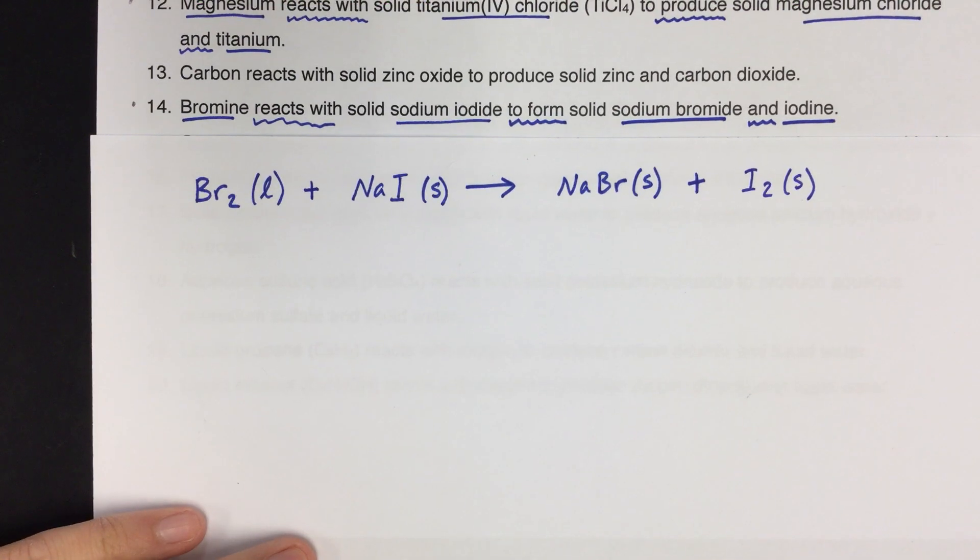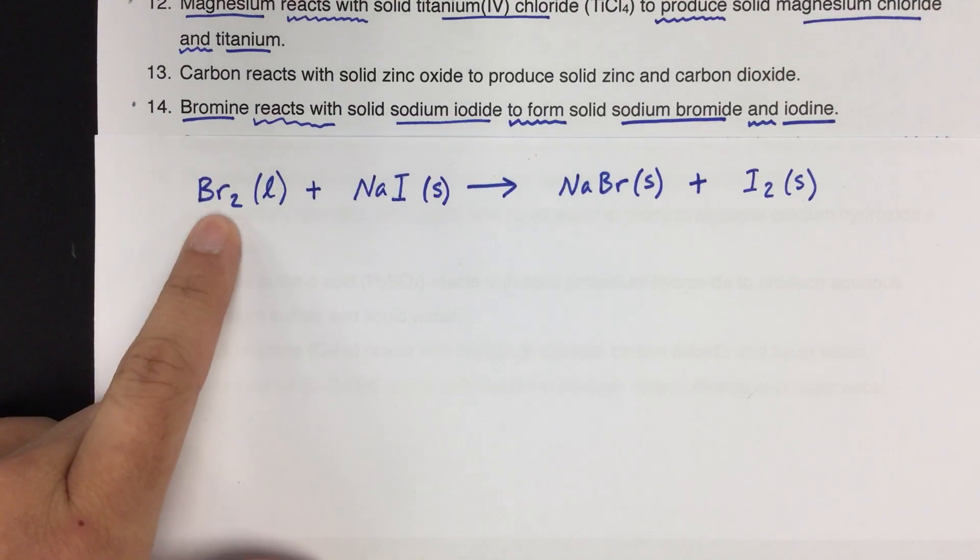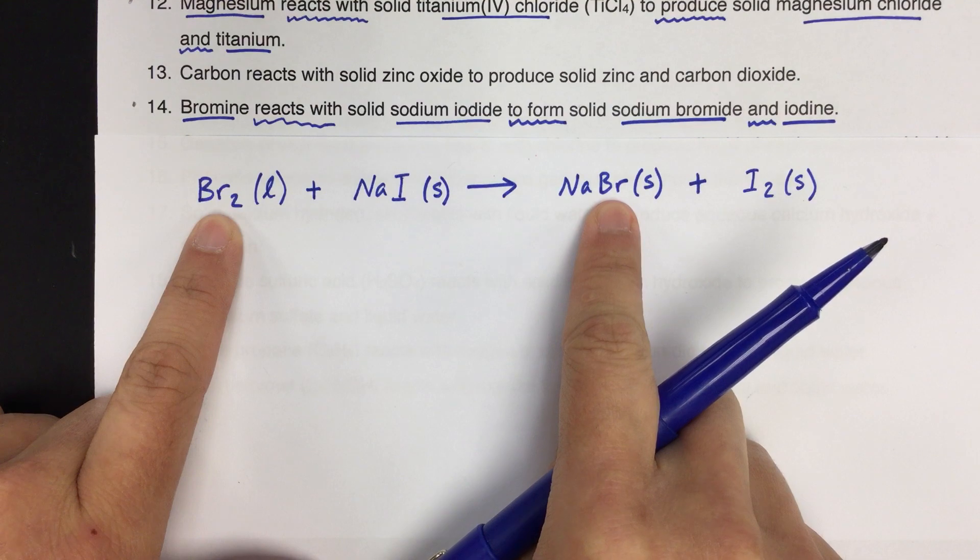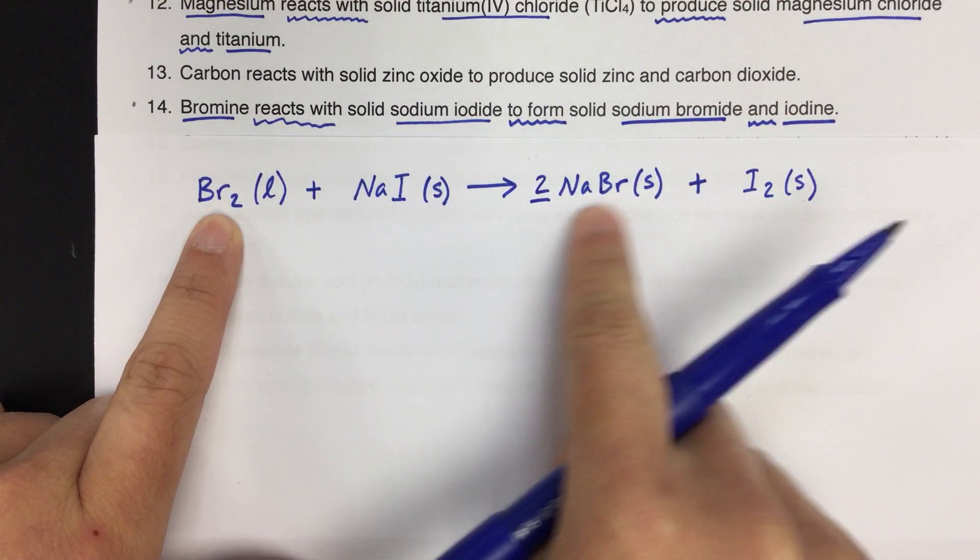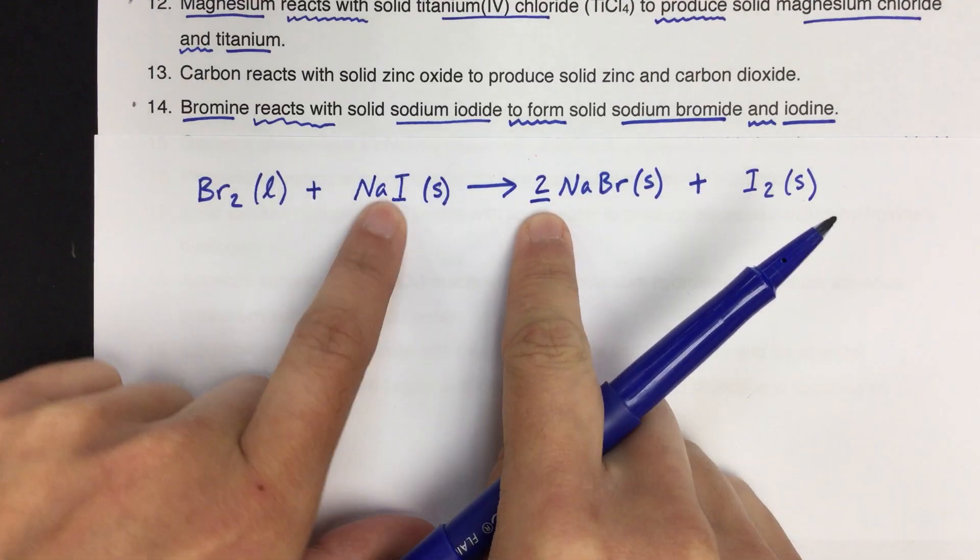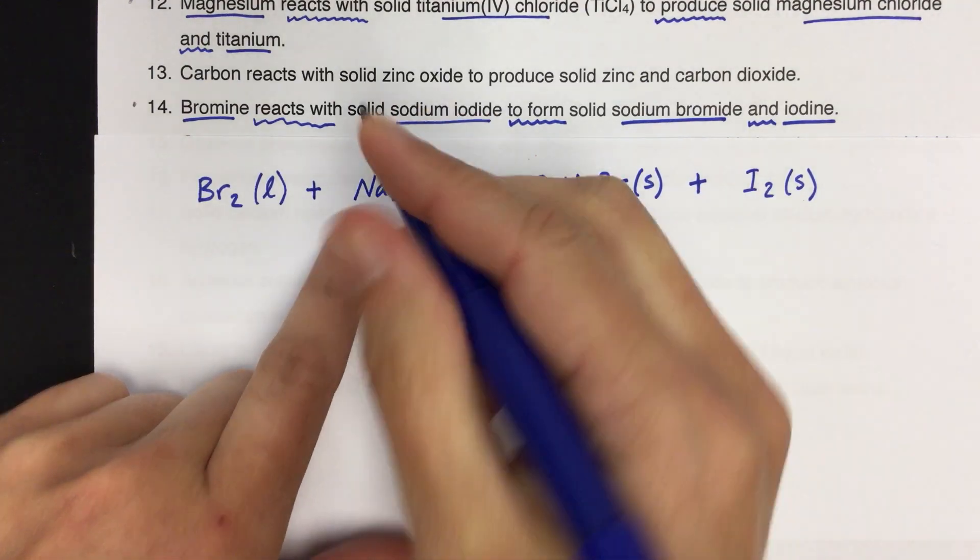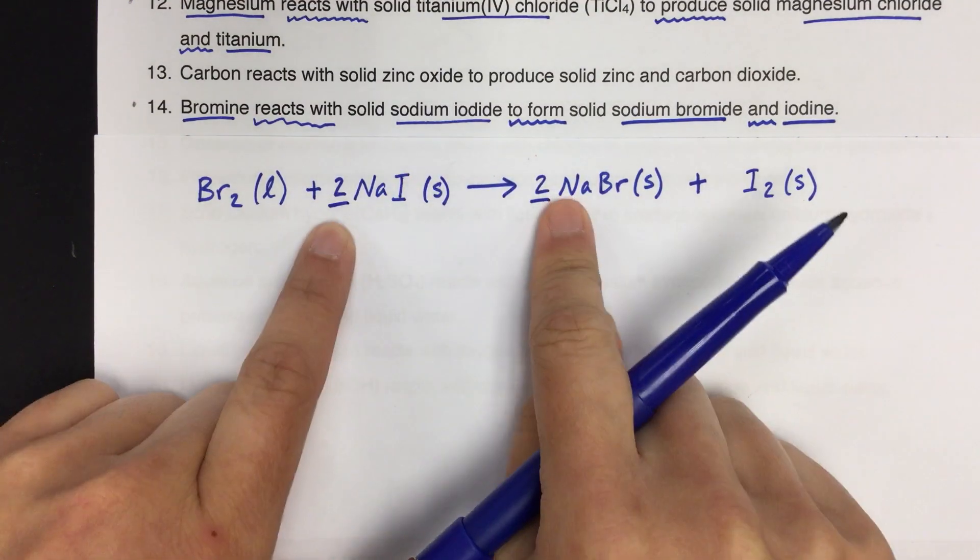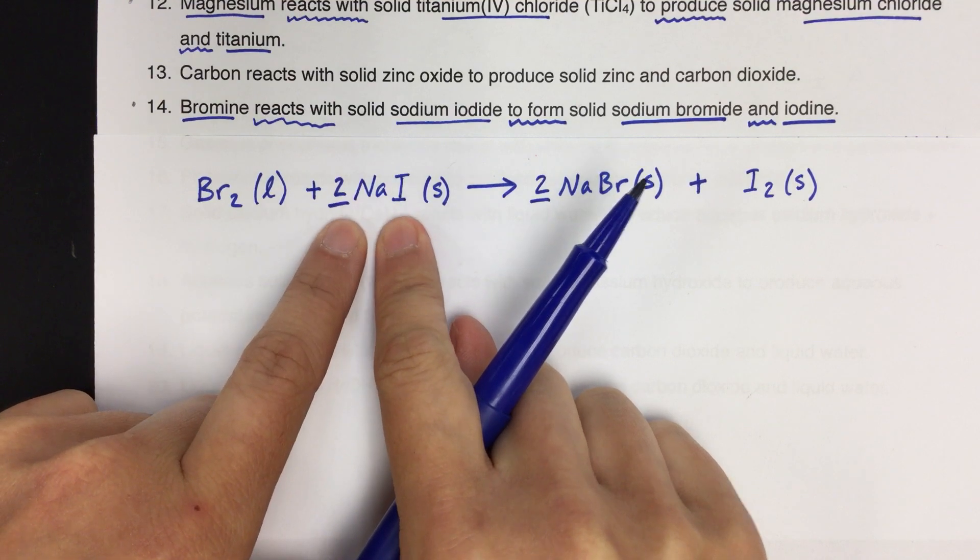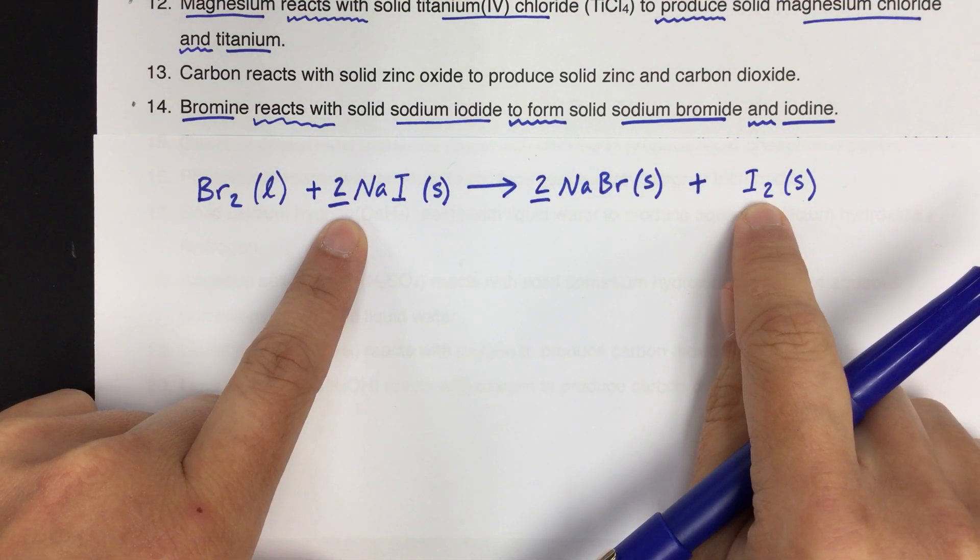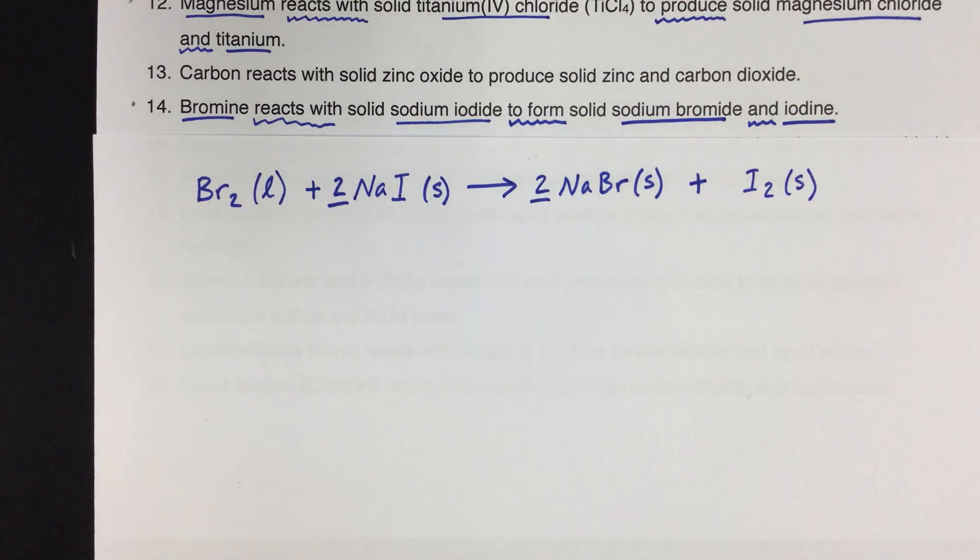All right, so there is the equation with phases. Now we need to balance. So pick where you want to start. I have two Brs here, one Br. I need to change that to two. So now I have two Brs. I've also just changed my sodiums by doing that. So I need to make sure that I have two sodiums on this side. So now the sodium is balanced, but now I've just changed the iodines. So go over here, and I also have two iodines. So that one works out.